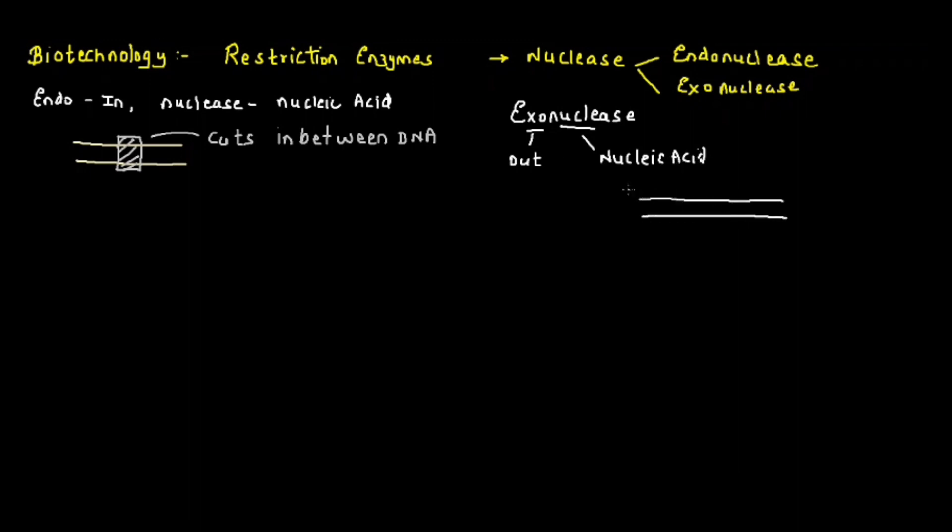As far as biotechnology is concerned, we don't use exonuclease, we always use endonuclease. To be very specific, we use restriction endonuclease. This means it is cutting the DNA at a restricted site - these enzymes cut the DNA at a particular site only, and if they don't get that site they are not going to cut the DNA.